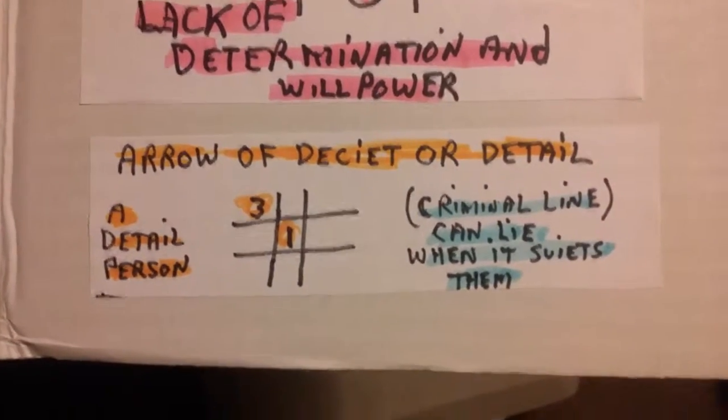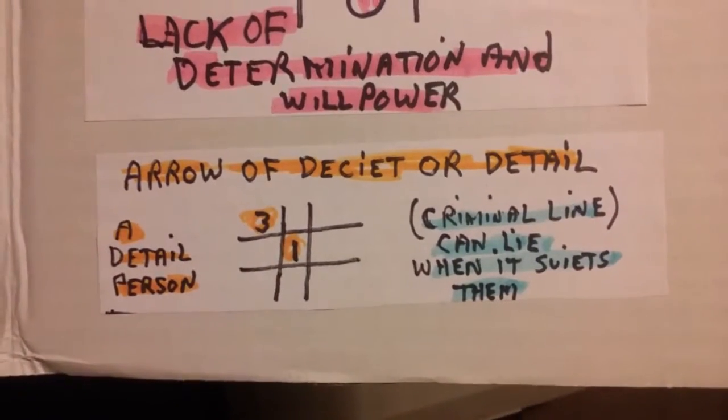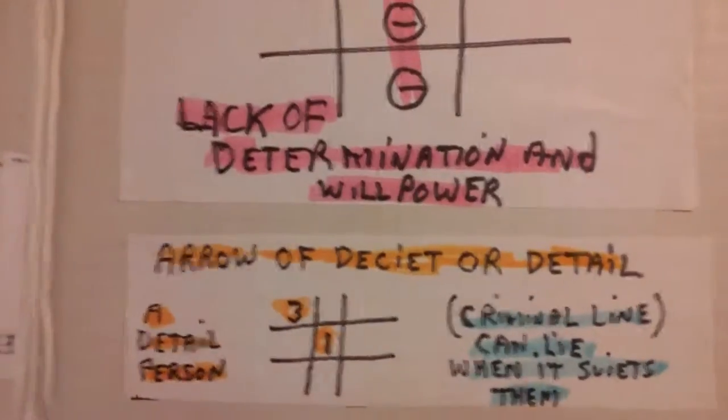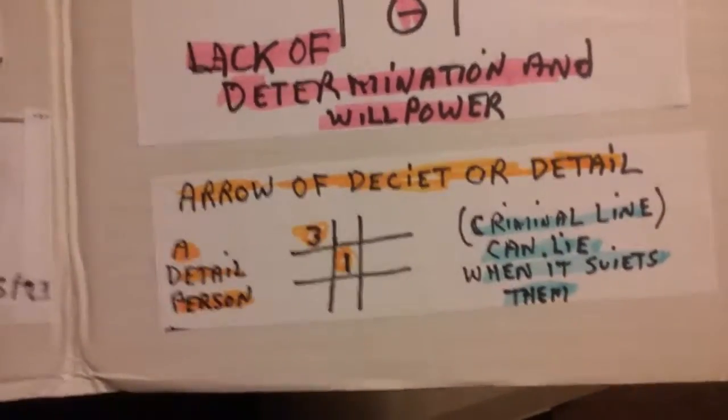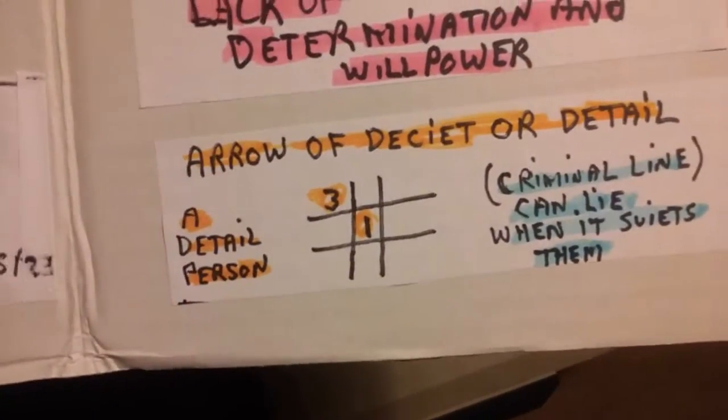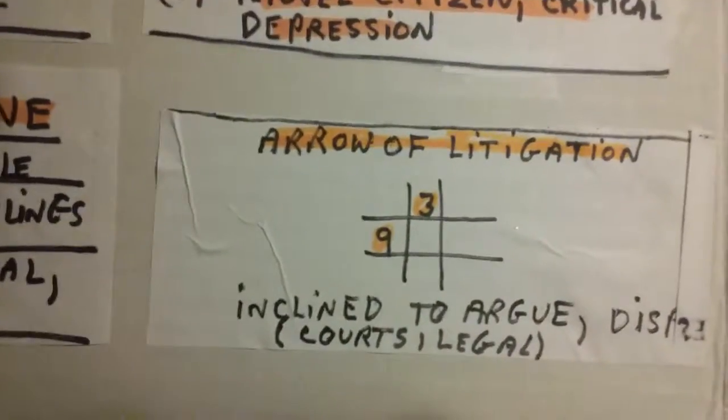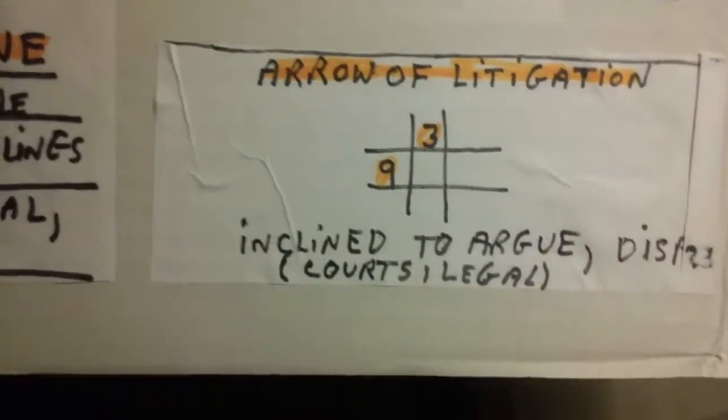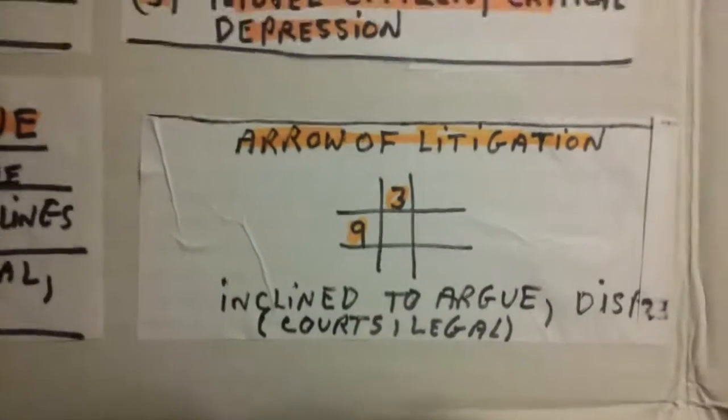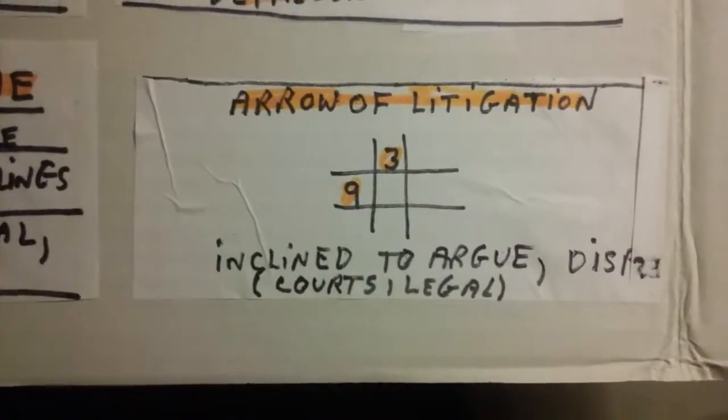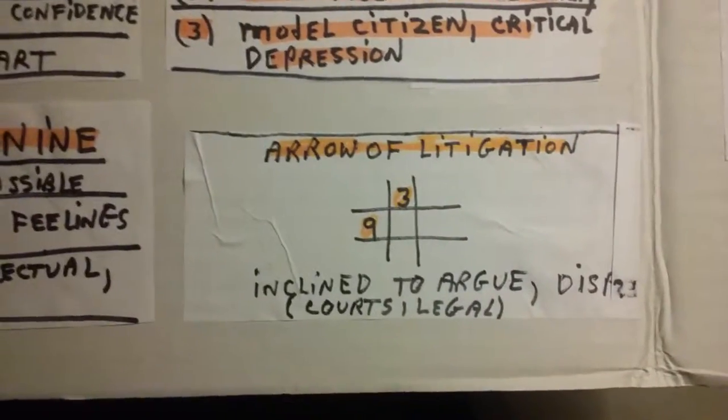Now, when the three and the one line up in such a way, it used to be called the criminal line, but it's actually a line of either detail or deceit. They found that criminals are clever enough to be deceitful, and they almost always have that lineup. This is the arrow of litigation, when the three and the nine are lined up catty-corner to each other or alongside of each other. There's a tendency of something legal or insurance brewing.